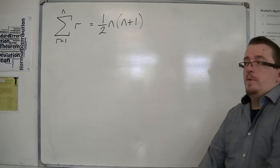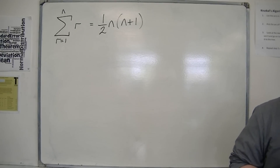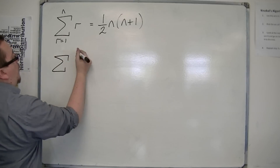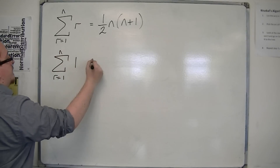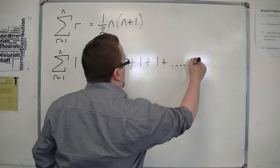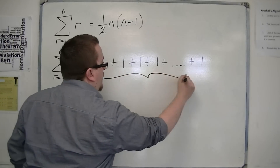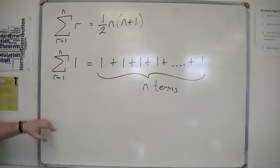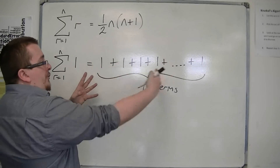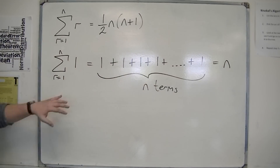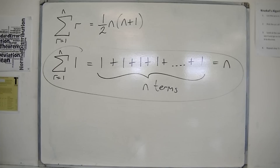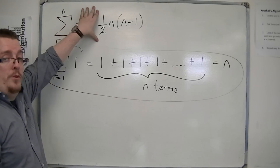There are a couple of other useful results. If you wanted to find the sum of 1 from r equals 1 to n, that would be 1 plus 1 plus 1 plus dot dot dot plus 1, with n terms. So the sum of 1 from r equals 1 to n is just n. This is one you need to remember, as it's not given in the formula booklet.